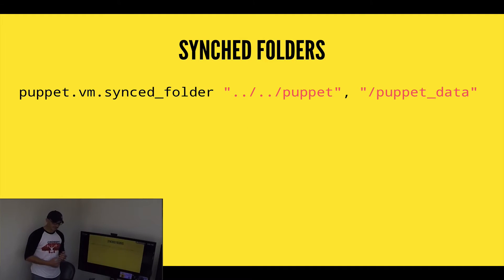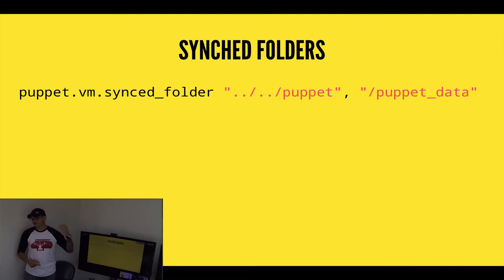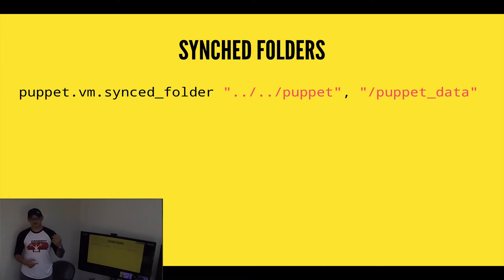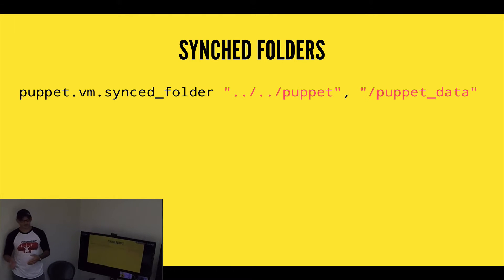We're going to use a synced folder. The folder one level up from our Vagrant file is the Puppet folder — the actual Git repository for our Puppet config. We're going to map that inside our Puppet Master as a folder named /puppet_data.